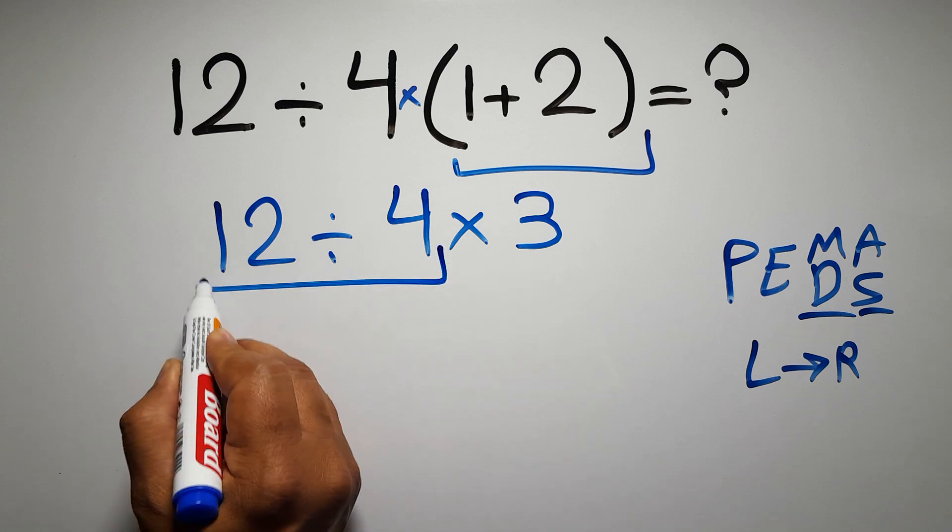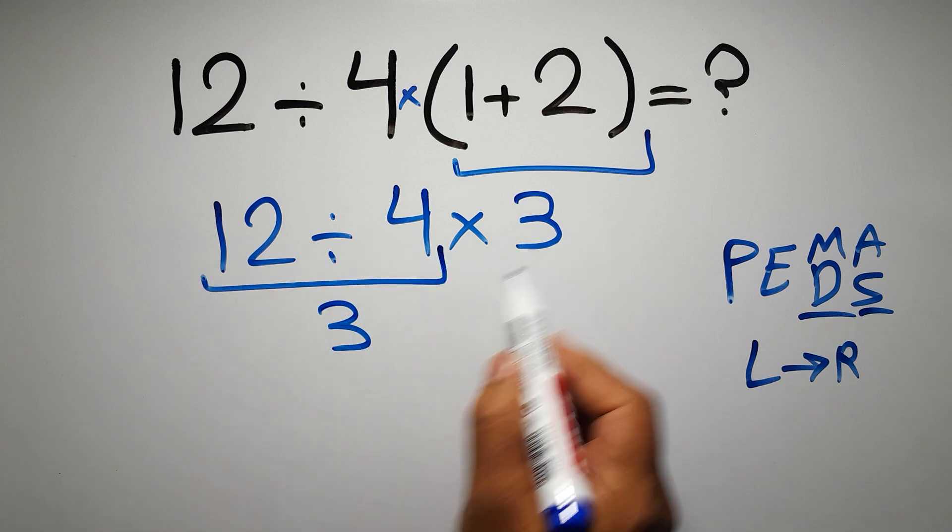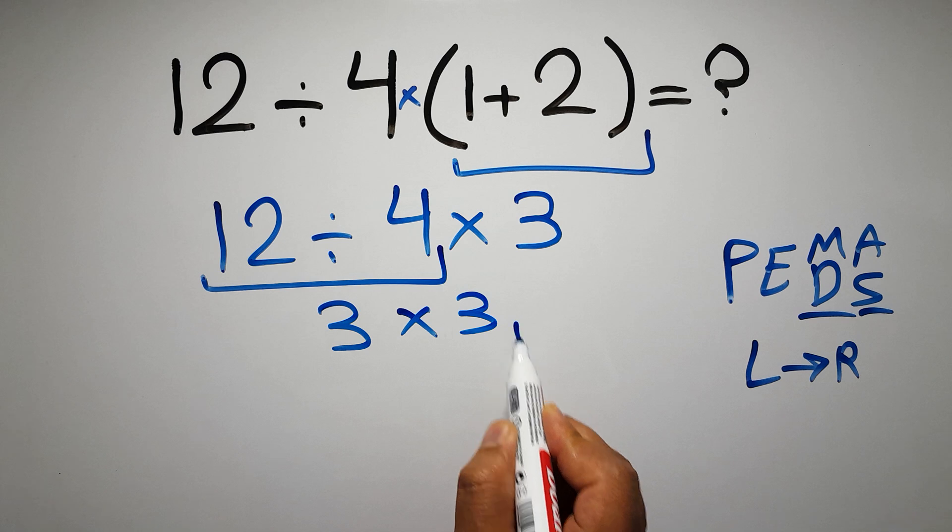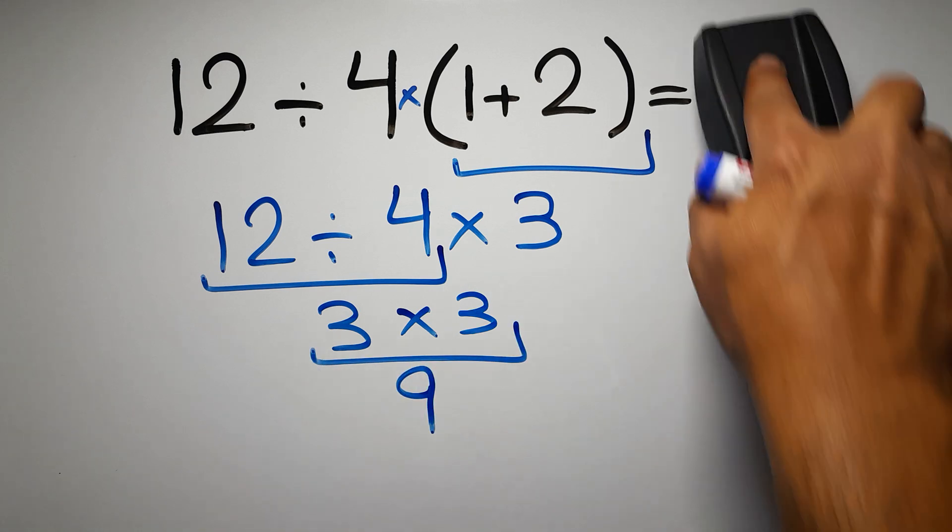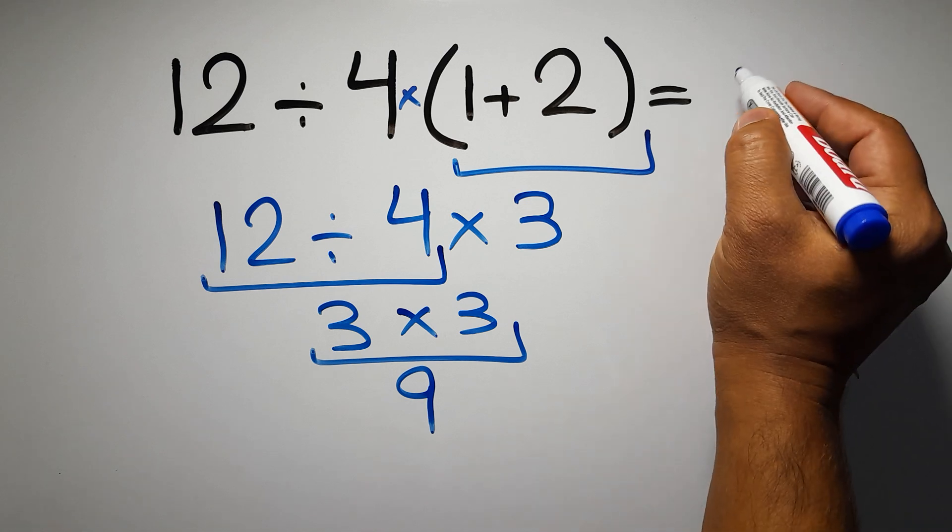12 divided by 4 gives us 3, and 3 times 3 is just 9. And this is our final answer to this problem. The correct answer is 9.